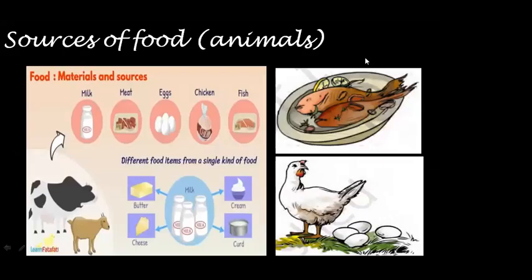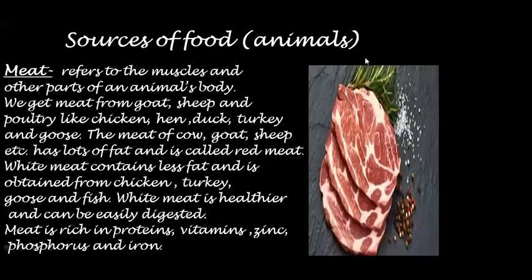Let's talk about sources of food that we obtain from animals. Generally we get milk, meat, eggs, chicken and fish from animals. Meat refers to the muscles and other parts of an animal's body. We get meat from goat, sheep and poultry like chicken, hen, duck, turkey and goose. The meat of cow, goat, sheep etc. has lots of fat and is called red meat.